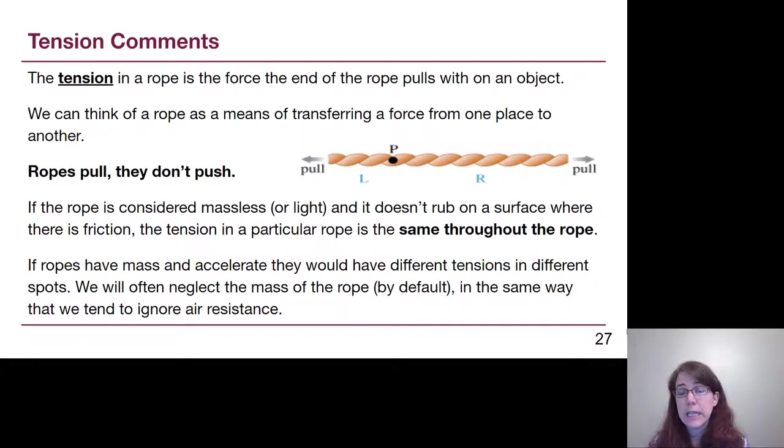So, a tension in a rope will always pull an object that it's attached to. Ropes don't push, they pull. And really, we can think of a rope as simply transferring a number value force from one place to another, sometimes around a pulley to change the direction, but the number value force is still the same on either end of the rope.